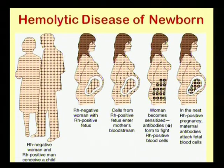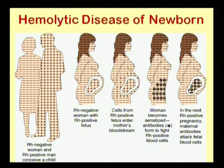RH positive blood group occurs in approximately 85% of the population. During delivery, a sensitization phase takes place. During the first delivery, sensitization of the mother's body occurs and IgM antibodies are secreted.